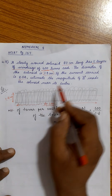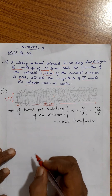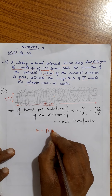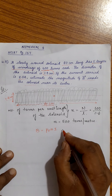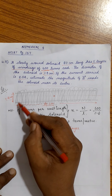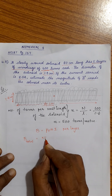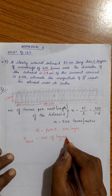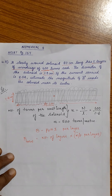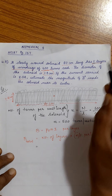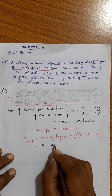If the current carried is 8 amperes, estimate the magnitude of the magnetic field inside the solenoid near its center. The formula is B = μ₀nI — that is for one layer. For five layers, the total magnetic field at the center equals the number of layers multiplied by the magnetic field per layer: 5 × μ₀nI.